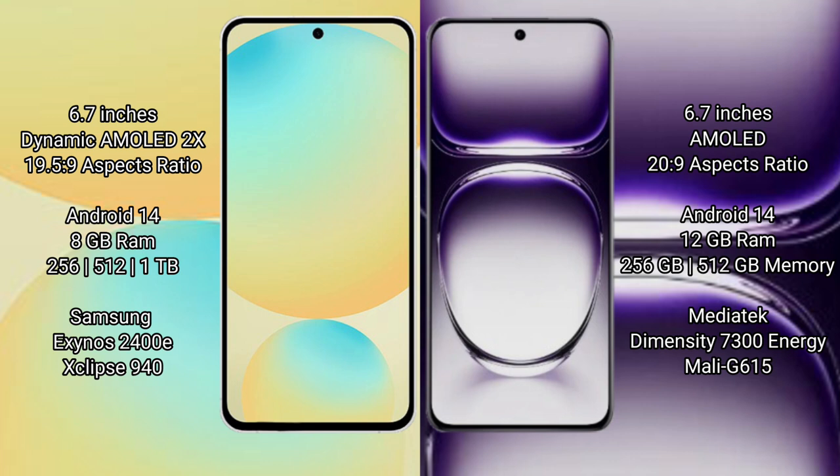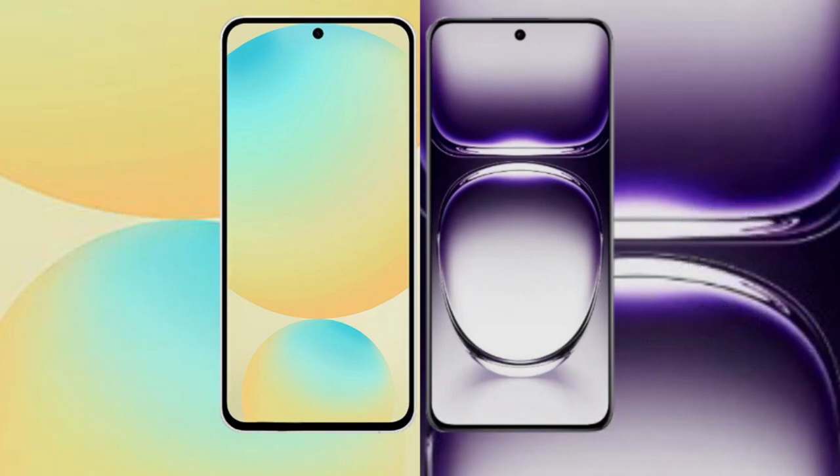Samsung Galaxy S24 FE comes with 8GB RAM and storage options of 128GB, 256GB, and 512GB. It is powered by the Samsung Exynos 2400E processor with GPU 940. Oppo Reno 12 comes with 12GB RAM and storage options of 256GB and 512GB. It is powered by the MediaTek Dimensity 7300 processor with GPU Mali-G615.